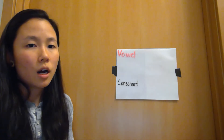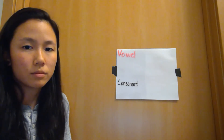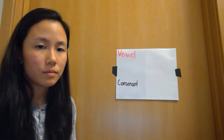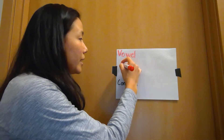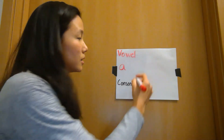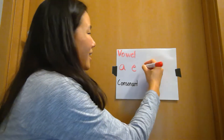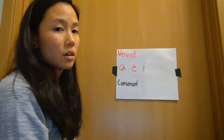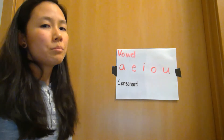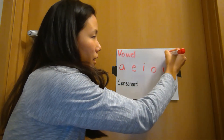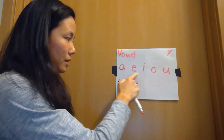So if you can think back, what are the different vowels? The different vowels are A, E — can you tell me the next one? — I, O, U, and sometimes Y. But for today, I'm going to put Y up here, and we're mostly going to be talking about these five vowels.